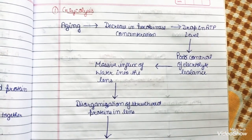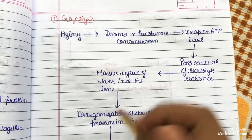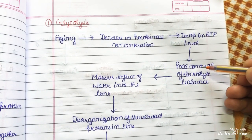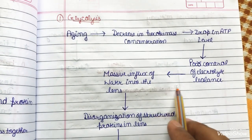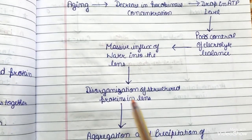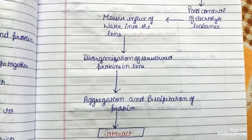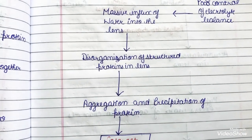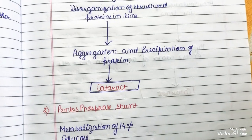In the glycolysis pathway, aging leads to a decrease in hexokinase concentration, which causes a drop in ATP levels. This results in poor control of electrolyte balance, followed by a massive influx of water into the lens. This water influx causes disorganization of proteins in the lens, leading to aggregation and precipitation of proteins, which finally leads to cataract.